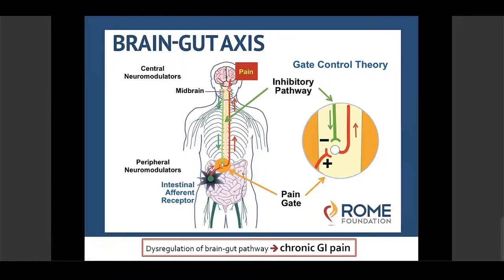The second-order neurons go into third-order neurons, which go into the cortex where the pain is experienced. The gate control theory relates to the brain's ability to reciprocally facilitate or block the ascending signal from the dorsal horn, thereby modulating how much reaches the brain and reducing the experience of pain. This connects directly to the psychotherapy aspects of treating patients with functional GI disorders.